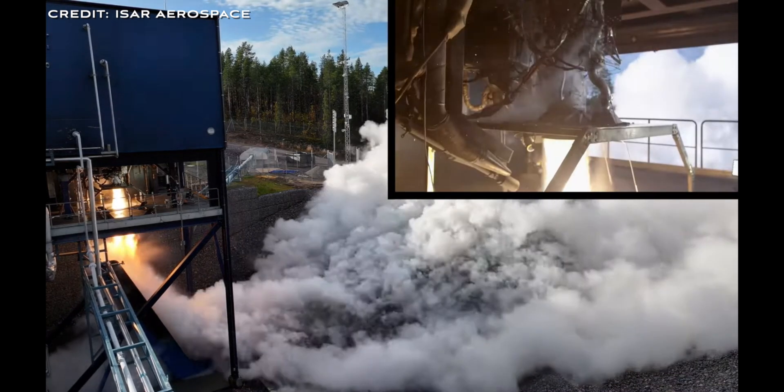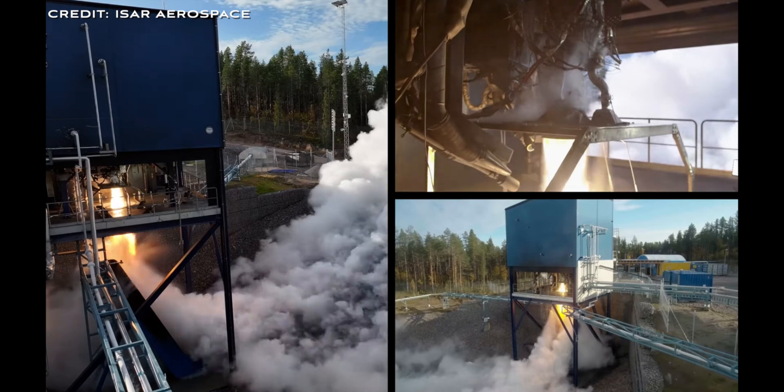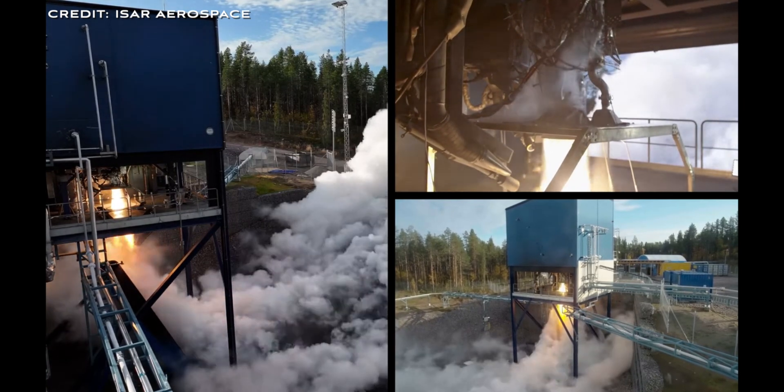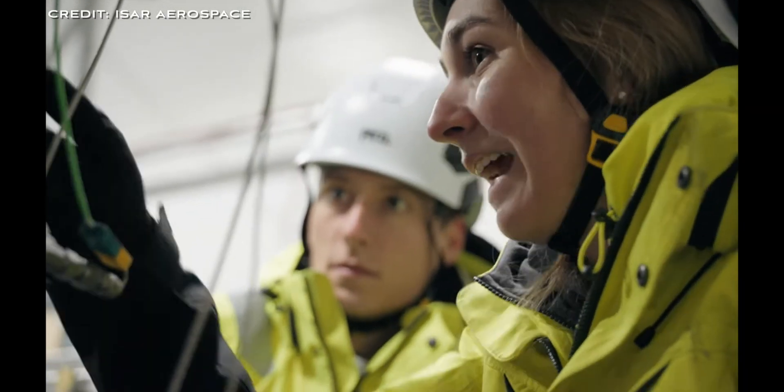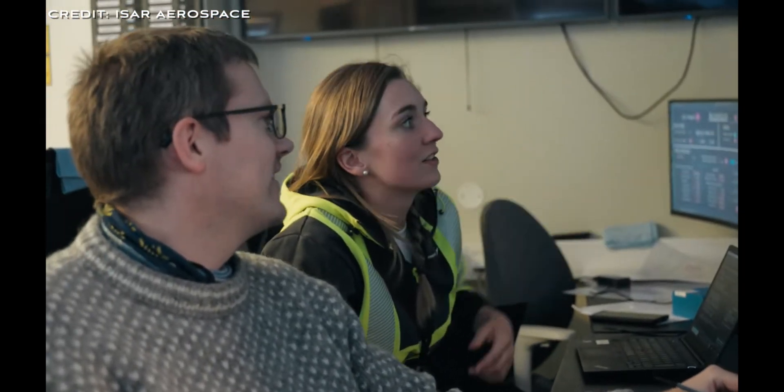The Aquila engine is designed to provide the necessary thrust for the Spectrum launch vehicle to carry payloads of up to 1,000 kilos to low Earth orbit and up to 700 kilos, that's approximately 1,500 pounds, to sun-synchronous orbit. The vehicle is 28 meters tall, that's 92 feet, with a diameter of 2 meters, or 6 and a half feet.